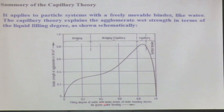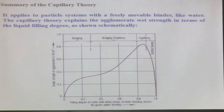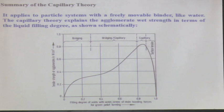The summary of capillary theory shows that for particle systems with freely movable binders like water, the agglomerate wet strength is explained in terms of the liquid filling degree. As the filling degree increases from about 20% to a critical limit, tensile strength goes up and reaches a maximum. Above that limit it drops because flooding occurs — the particles and fluid become like a suspension and start flowing, so you lose the bonds.